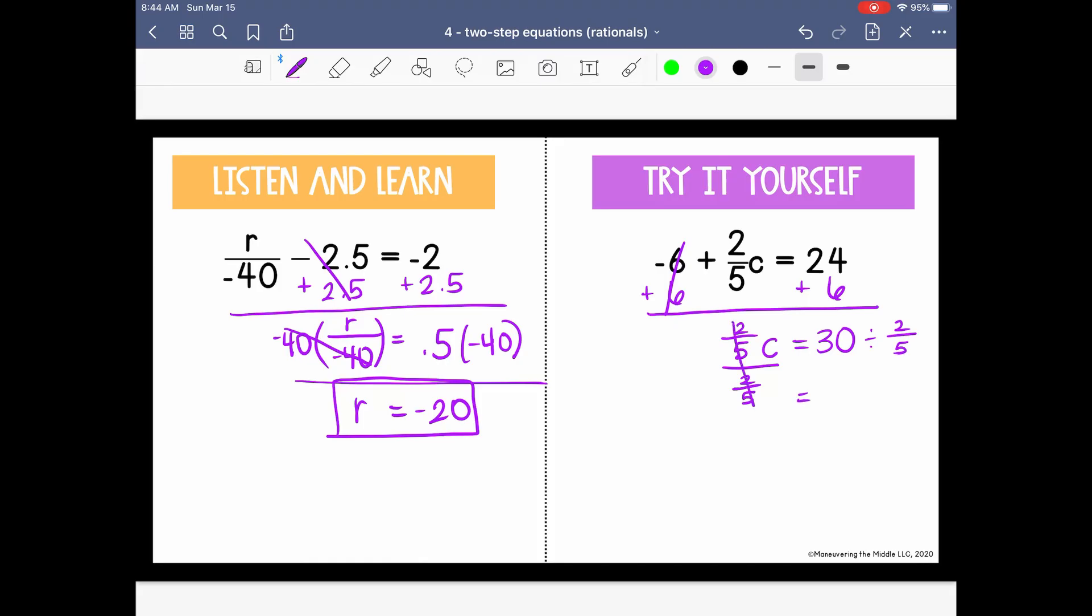So it cancels from the left. I'm going to rewrite 30 as a fraction by writing 30 over 1, and I'm going to multiply by the reciprocal, so 5 halves. I can cross-cancel if I want, since these are both even, so 2 divided by 2 is 1. 30 divided by 2 is 15. I'm running out of space here, but if I multiply my numerators, 15 times 5 is 75. 1 times 1 is 1. So we know that c equals 75.